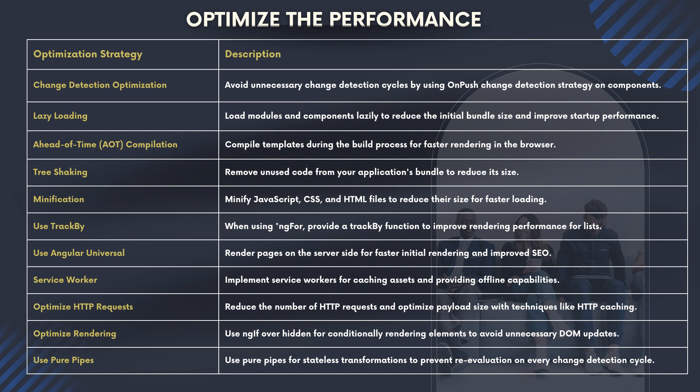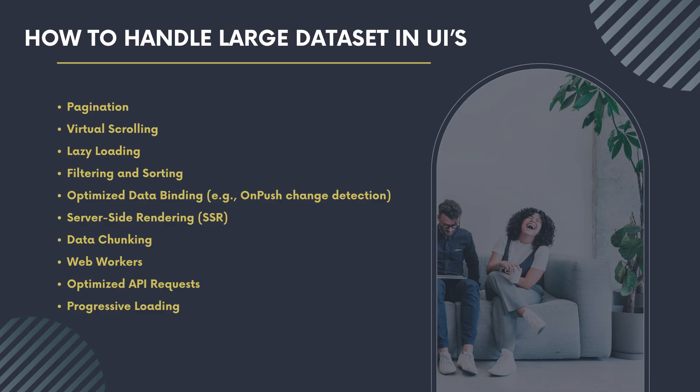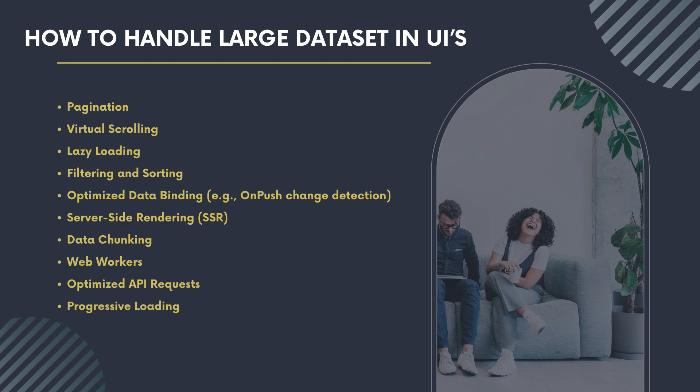Now, suppose you are getting one lakh records — how would you handle that in the DOM? For handling large data sets, we use pagination, where we set a limit on how many records are shown at one time — say 50 or 100 records per page.